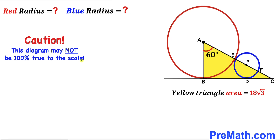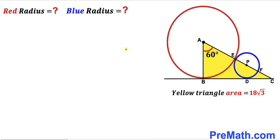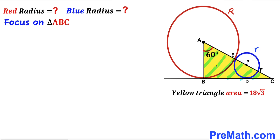Please keep in mind that this figure may not be 100% true to scale. I am going to label the radius of the big red circle as uppercase R, and the radius of the smaller blue circle as lowercase r. Our task is to calculate the value of uppercase R and lowercase r. Now let's focus on the yellow shaded triangle ABC.